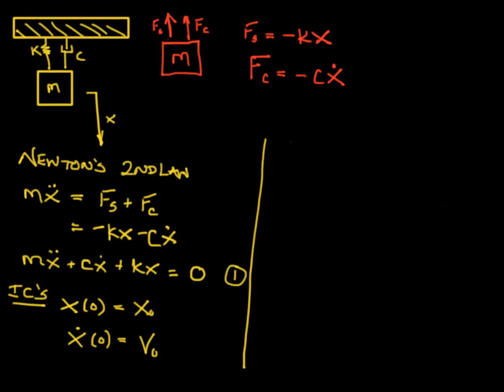So we proceed like before where X is assumed to be of the form C bar E to the R T. The second derivative implies that X derivative is equal to R C bar E to the R T and the second derivative X double dot is equal to R squared C bar E to the R T.